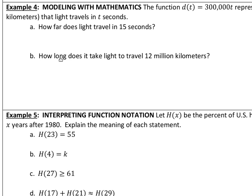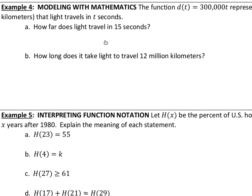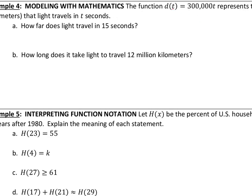Example four, another modeling with mathematics problem here. The function d of t equals 300,000 t. That represents the distance that light travels in t seconds. Now, that's a pretty alarming number. If you were to think, if t were to equal just one second, that means light traveled 300,000 kilometers in that one second. So let's just take a look. Make sure we know if you can turn things into inputs and outputs. That's incredibly beneficial. So d of t, all of that is our output. It's a distance. It's the kilometers. Inside the parentheses, we can see the t. That's our input. That's the time. That's the number of seconds.